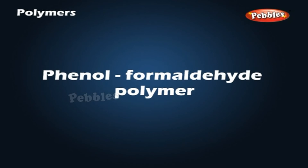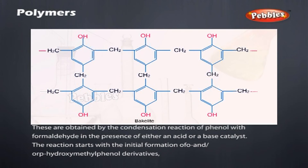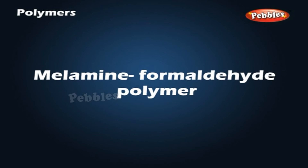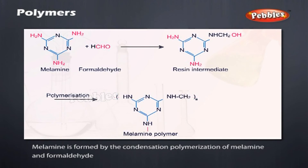Phenol-formaldehyde polymer: These are obtained by the condensation reaction of phenol with formaldehyde in the presence of either an acid or a base catalyst. The reaction starts with the initial formation of o- and/or p-hydroxymethylphenol derivatives, which further react with phenol to form compounds having rings joined to each other through CH₂ groups. The initial product could be a linear product — novolac, used in paints. Melamine-formaldehyde polymer: Melamine is formed by the condensation polymerization of melamine and formaldehyde.